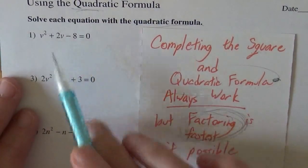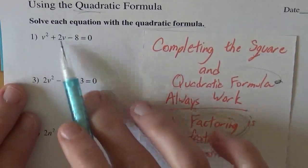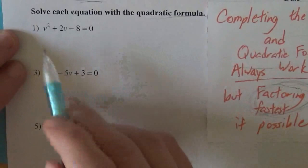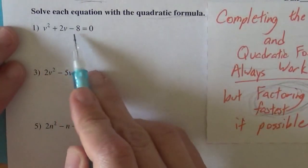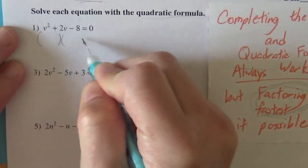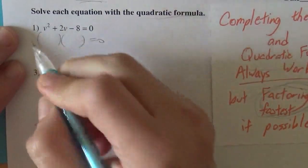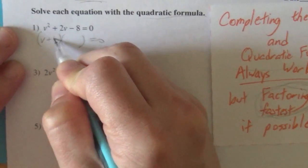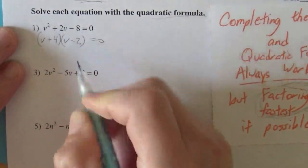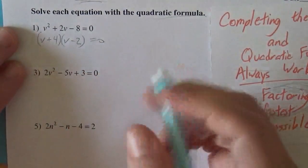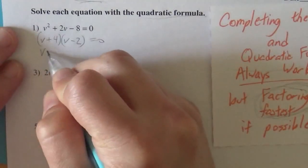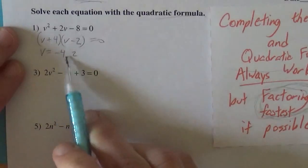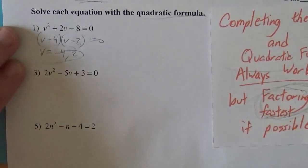Sometimes completing the square is really nice when the numbers are even. So I'm going to do this one all three ways, just because I can. This one here factors — I can definitely find things that multiply to negative 8 and add to positive 2: v plus 4 and v minus 2. That multiplies to negative 8 and adds to 2. So v equals negative 4 or 2, from our zero product property.